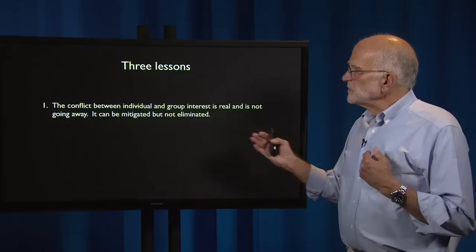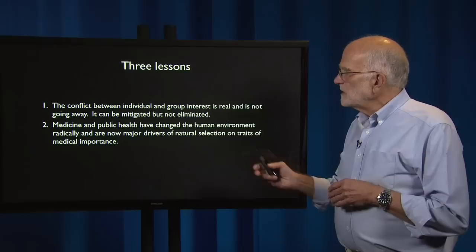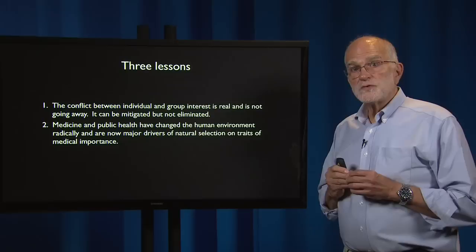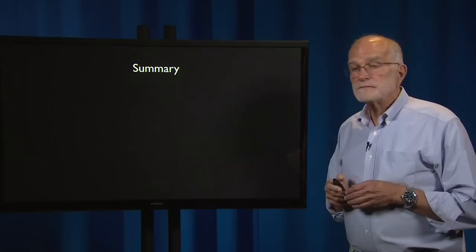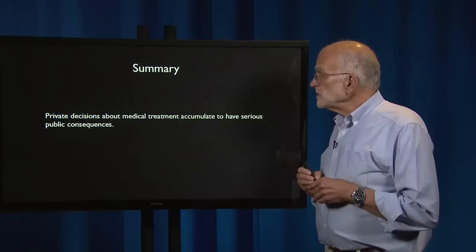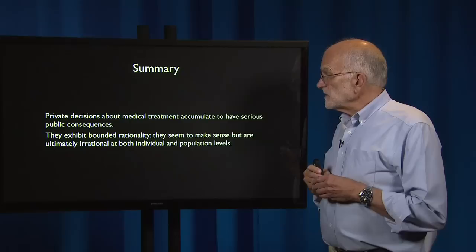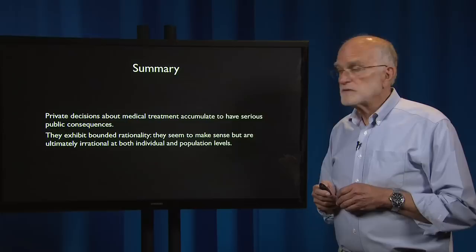So there are three lessons from this. The first is that the conflict between individual and group interest is real — it's not going away, and it can be mitigated but not eliminated. The second is that medicine and public health have changed the human environment radically and are now major drivers of natural selection on traits of medical importance. And the third is that sometimes when medicine solves old problems, it creates new ones. To summarize: private decisions about medical treatment accumulate to have serious public consequences. They exhibit bounded rationality — they seem to make sense, but they are ultimately irrational at both individual and population levels. We need an open conversation about the health consequences of the tensions between individual liberty and social responsibility.